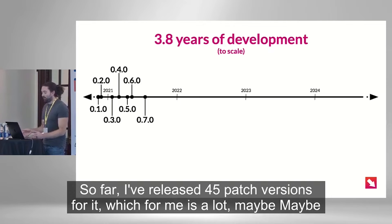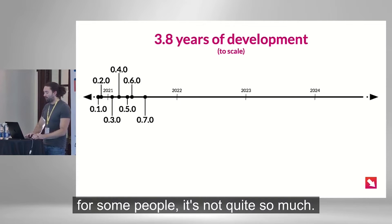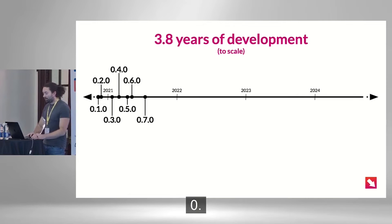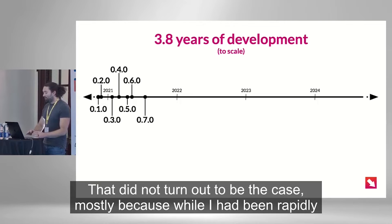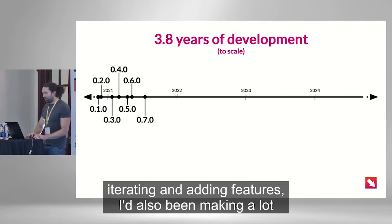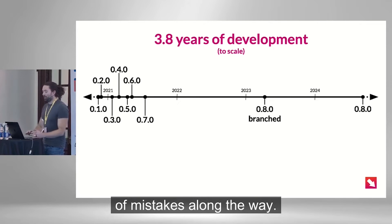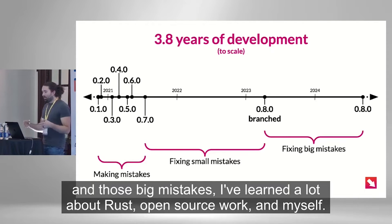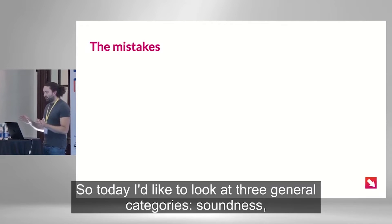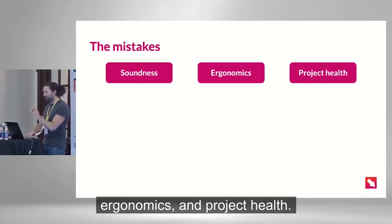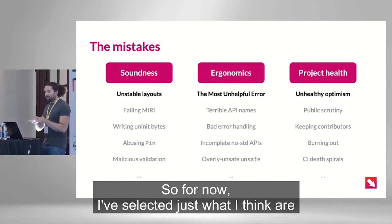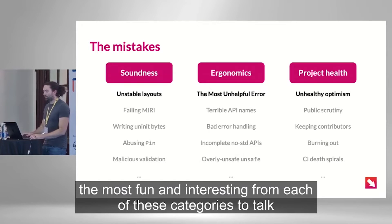So far I've released 45 patch versions for it. When I released 0.7, I thought that might be the last major one before 1.0. That did not turn out to be the case — mostly because while I had been rapidly iterating and adding features, I had also been making a lot of mistakes along the way. So over the next three years of fixing those small mistakes and those big mistakes, I've learned a lot about Rust, open source work, and myself. Today I'd like to look at three general categories: soundness, ergonomics, and project health. I've selected just what I think are the most fun and interesting from each of these categories.